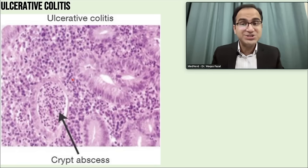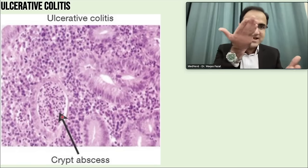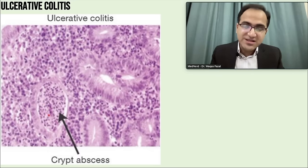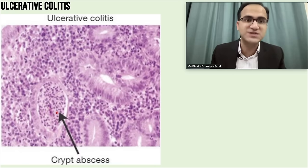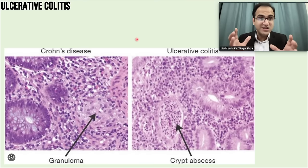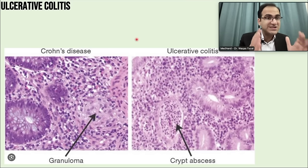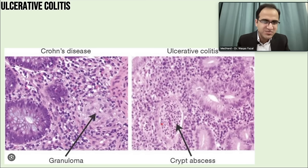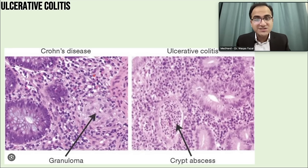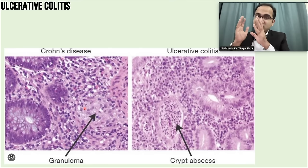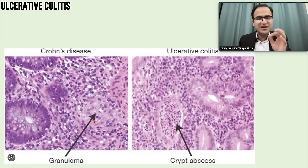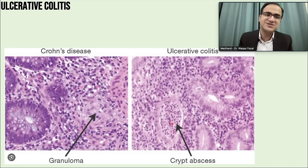These histology pictures are very high-yield for exams. In ulcerative colitis, the crypts — which should be empty — contain neutrophils and immune cell infiltrates, forming crypt abscesses. In Crohn's disease, on the other hand, you would find non-caseating granulomas. Must remember: crypt abscesses for ulcerative colitis; non-caseating granulomas for Crohn's disease.